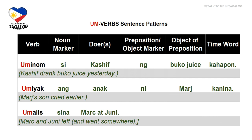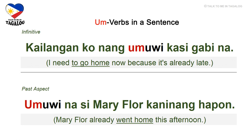You don't have to worry too much about these sentence patterns; just use them as a guide so you can freely form Tagalog sentences. Let's now use all the verb roots we learned in sentences. We will have two sets per slide — the first sentence uses the infinitive form and the second uses the past aspect.